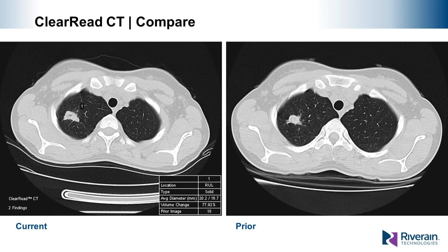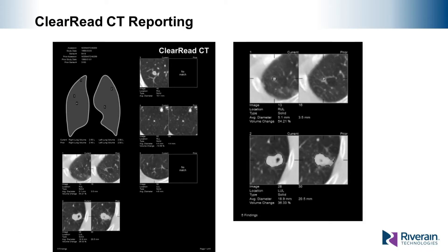With the ClearRead CT Compare application, we can detect a nodule in the current exam and then associate it with a corresponding location in a prior exam. By capturing two time instances of the same nodule, we can determine if the nodule is growing, how much the volume is changing, and offer estimates of volume doubling time. A full ClearRead CT Detect summary report is provided, including location, measurements, comparisons when available, and an image chip view for each finding.